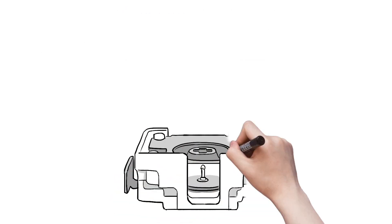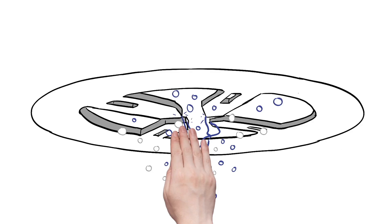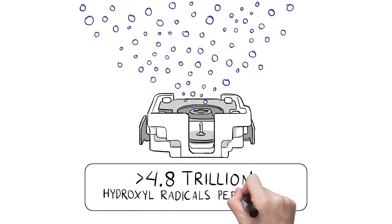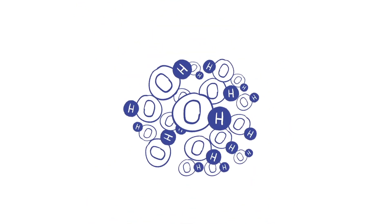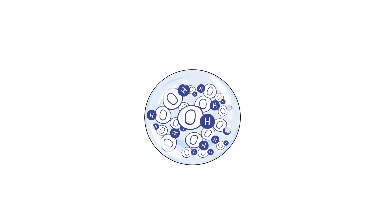Nano-X actively collects water molecules from the humidity in the air and applies a high voltage to them, generating over 4.8 trillion hydroxyl radicals or nanoparticles per second. These nanoparticles are encased in water to ensure they survive long enough to improve the air quality within the room.